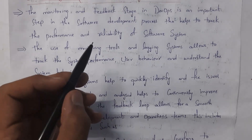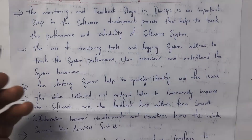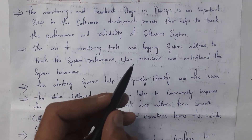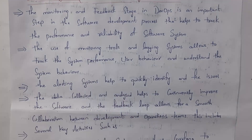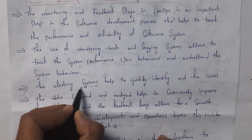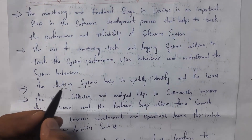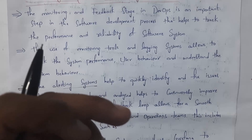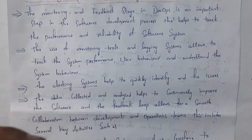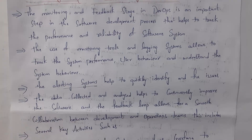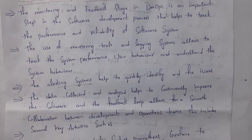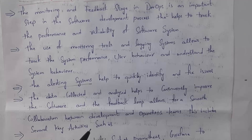Even after deployment, we need to monitor our software to check whether it is working correctly or not. By using various monitoring and logging tools, we can track system performance, user behavior, and whether the software is giving correct responses to users. By using alert systems, we can quickly identify and fix issues. For example, if the software is not working properly, consuming a lot of memory, or running slow, an alert message is automatically sent to developers.